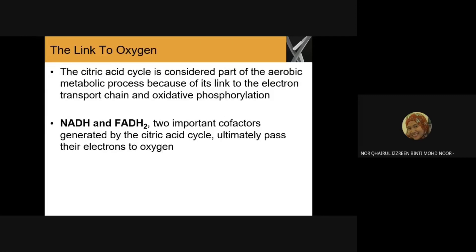How can we link the TCA cycle to oxygen? The TCA cycle is considered part of the aerobic metabolic process because of its link to the electron transport chain and oxidative phosphorylation. NADH and FADH₂, two important cofactors generated by the TCA cycle, will ultimately pass their electrons to oxygen. With this, we end the second lecture this week. Thank you very much.